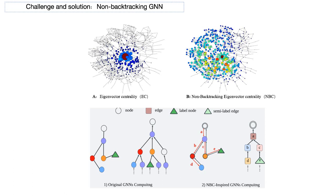Hence, we are exploring the use of non-backtracking centrality to promote a more fair distribution of centrality scores, and develop a corresponding graph neural network based on this concept.